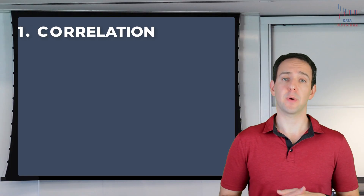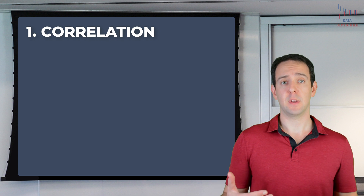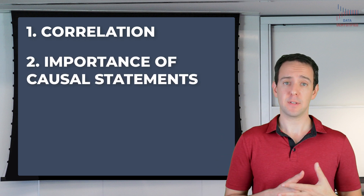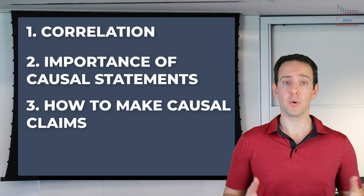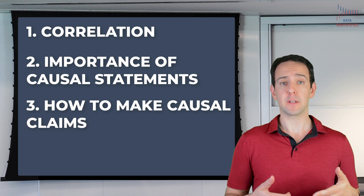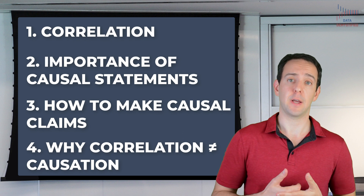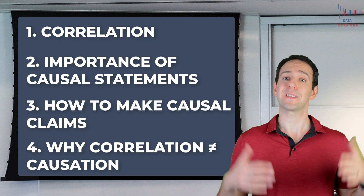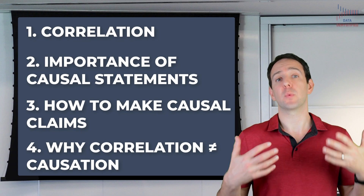I'm going to first very quickly explain what a correlation is, then explain why we really care about making causal statements, show you what does actually allow you to make all-important causal claims, and finally show you why correlations don't necessarily imply causation. I'll do all this with as little jargon as possible, and an emphasis on intuition.